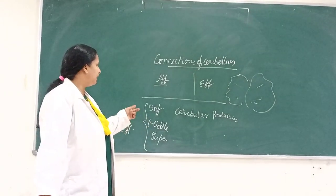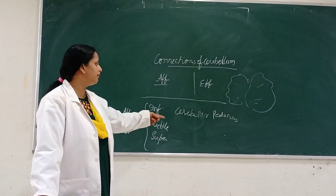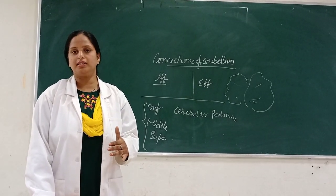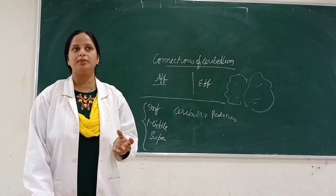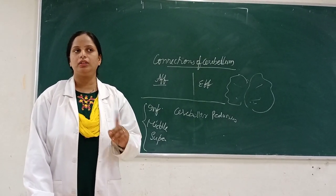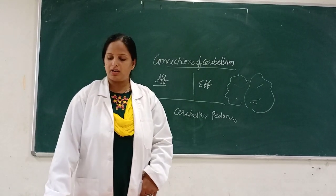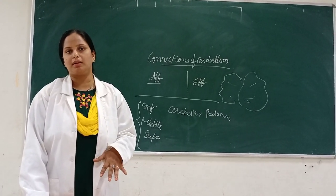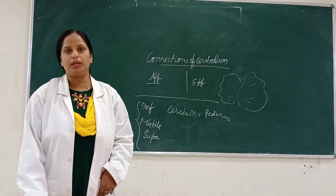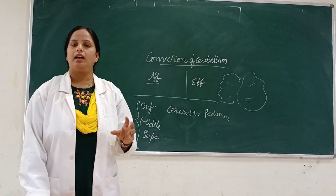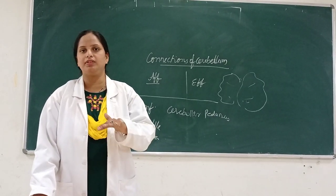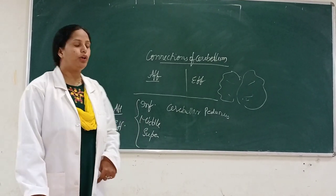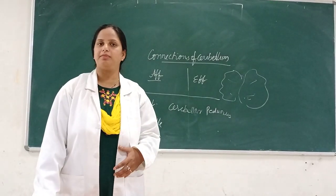Coming to the middle cerebellar peduncle, the afferents are the corticopontocerebellar fibers and the commissural fibers. Commissural fibers connect the same part on either side — from the right and the left side. They come from one side of the cerebellar cortex and go to the opposite side, so together they function as a unit. The efferent fibers here are also the commissural fibers.